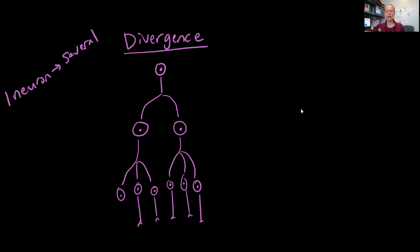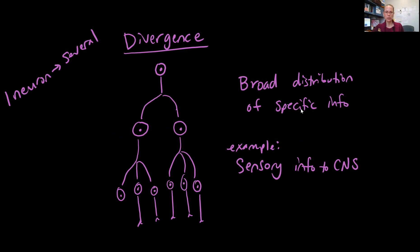In divergence, one neuron synapses on several neurons, splitting more and more as it goes. Divergence is important for the broad distribution of specific information so it can easily spread throughout the body. One example is sensory information coming into the central nervous system.